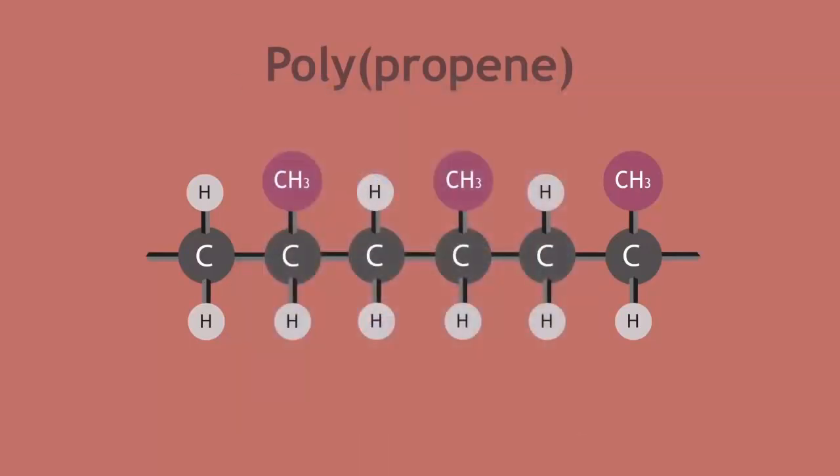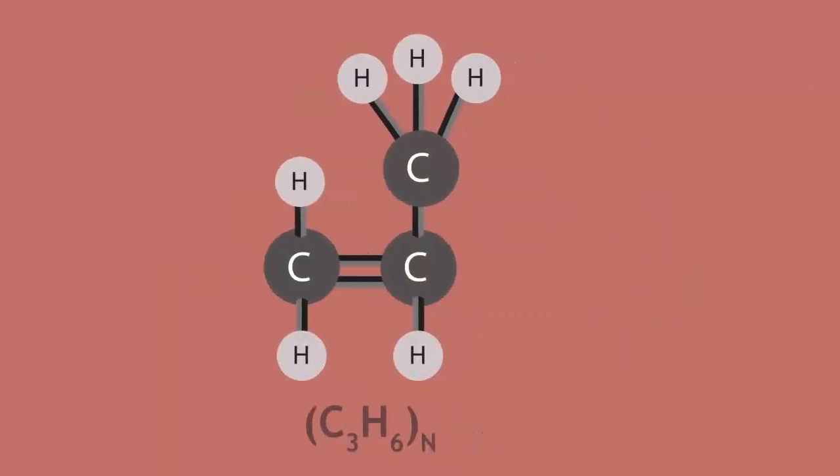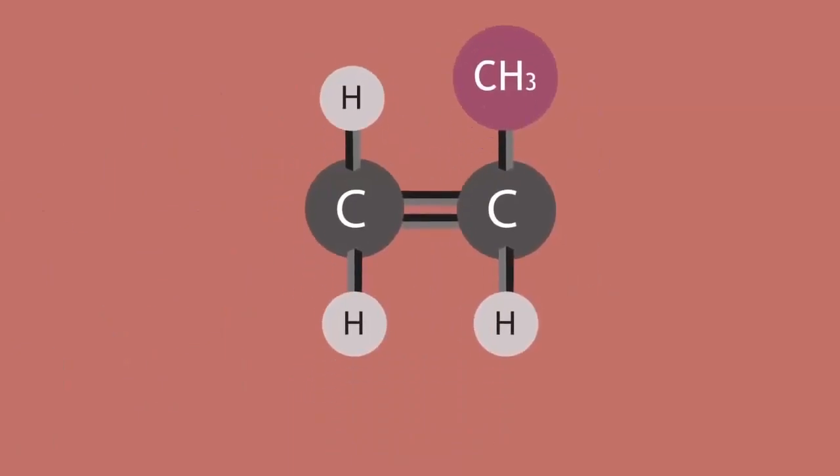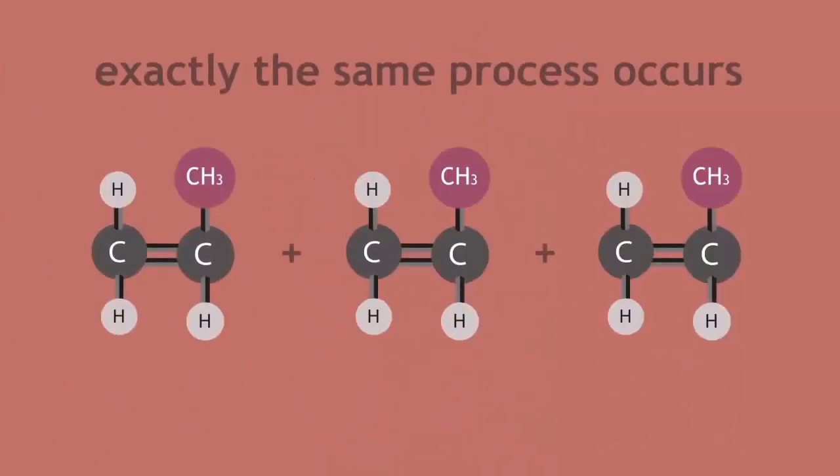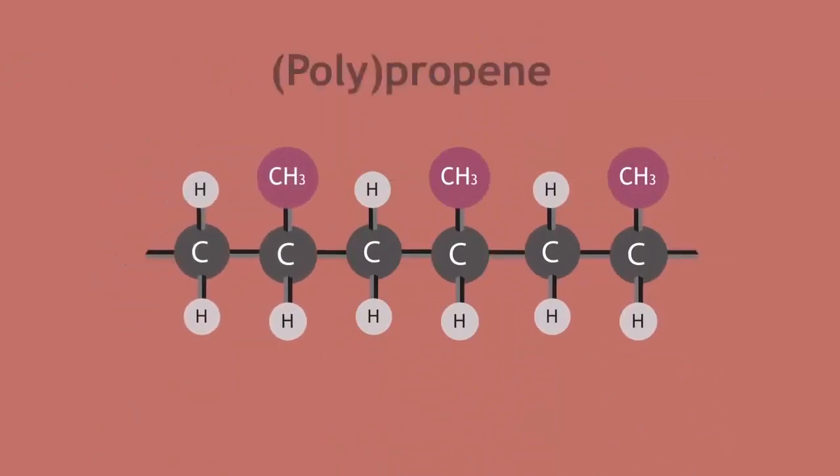Hopefully you will have drawn propene as the monomer. Although the actual shape of this molecule looks like this, when drawing polymers it is much better to think of the molecule in this shape. Exactly the same process occurs: the double bond breaks and the polypropene is formed. Here is the equation for this reaction.